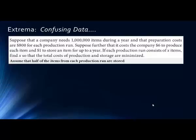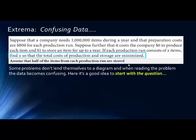Let's look at another problem. This one is a little bit more confusing. If I look at the last sentence, it says assume that half of the items from each production run are stored. That's not the question. So let's go back up one more sentence. If each production run consists of x items, find x so that the total cost of production and storage are minimized. Looking through this, I don't see any equations. So it means we're going to have to figure out equations. But we're trying to minimize the total costs of production and storage. So that's the first thing I'm going to write. Minimize total costs. Second thing I'm going to write is that total costs equal production costs and storage costs.